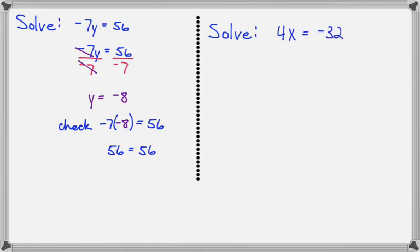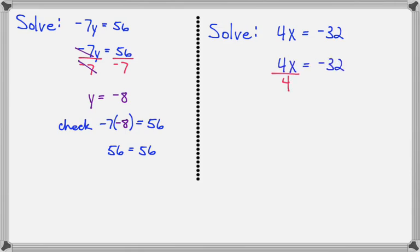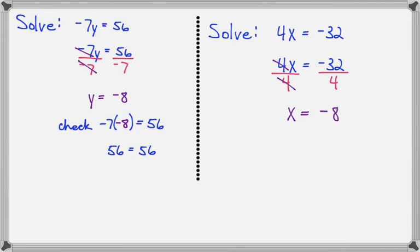Let's try another one: 4x equals negative 32. So 4 times some missing number is negative 32. Let's divide both sides by this coefficient that we want to cancel. If I put a divided by 4 on the left side, I'll have to put a divided by 4 on the right side. Now cancel the 4s, and x equals negative 32 divided by 4, which simplifies to negative 8.